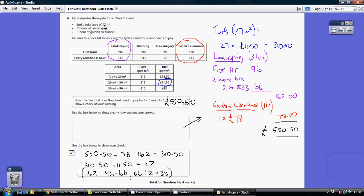Now, he's turfed 27 metres squared, so that's between 20 and 30 metres. So that's going to cost £11.50 per metre squared. Now, he's got 27 metres squared, so it's going to be 27 lots of £11.50. So the turf alone is going to cost £310.50.